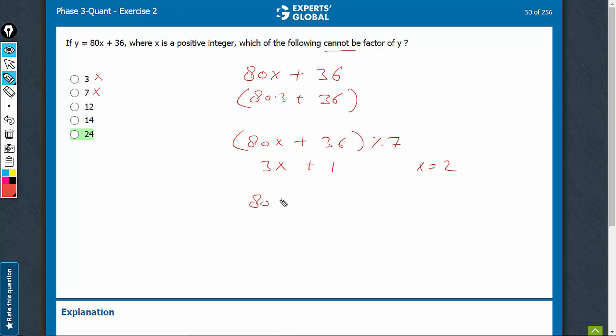12, 80x + 36. 36 will always leave remainder 0 and for certain values, for example x equal to 3, you will find that 80x will also lead to a 0 remainder. So 12 is also possible.